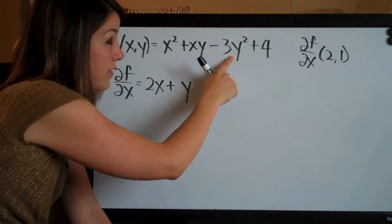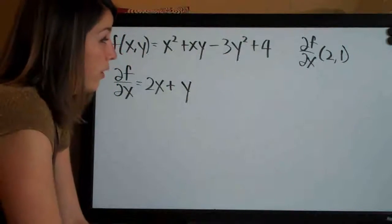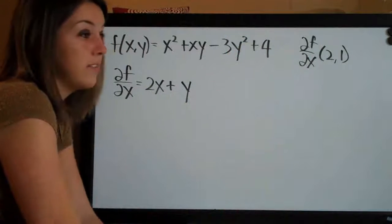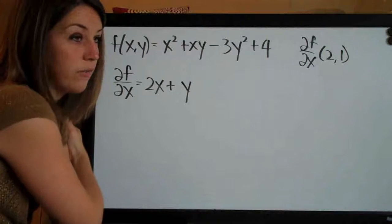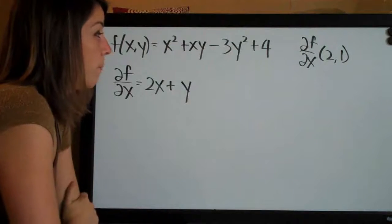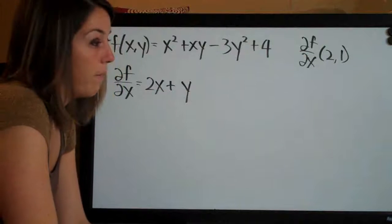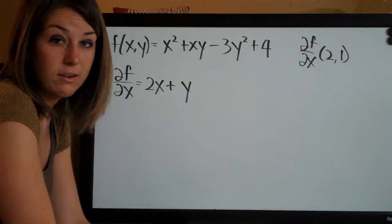And then here, again we treat y as a constant. So if y is 4, we'll have 4 squared which is 16 times 3 is 48, so we'll have minus 48. 48 is just a constant. And when we take the derivative of a constant, it's just 0.